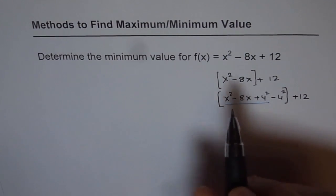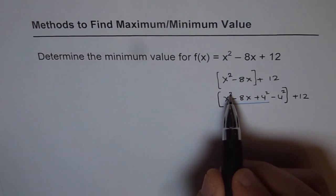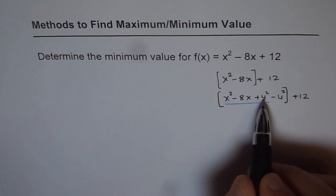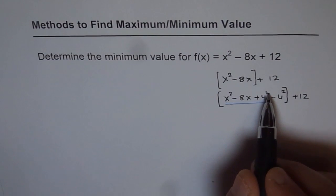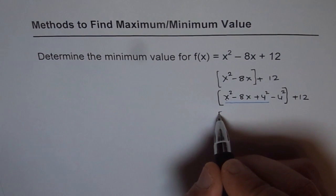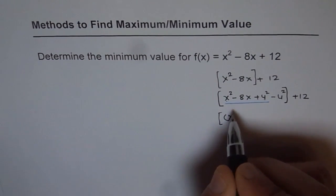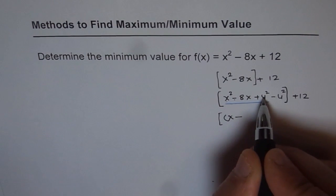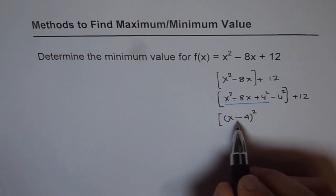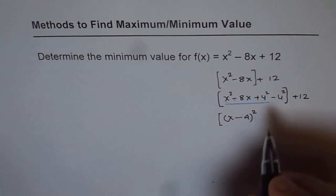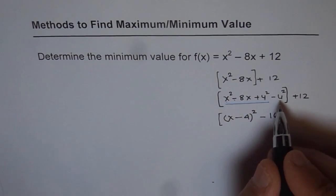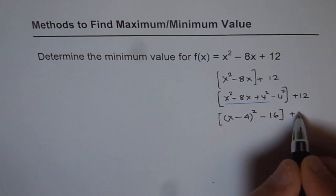This is a trinomial where the first term is x squared, the middle term is twice x and 4, and the third term is 4 squared. So it forms a perfect square. We can write this as x minus 4, whole square. So these three terms become (x minus 4) squared, minus 4 squared. Let me write that as 16 now — 4 squared is 16 — plus 12.